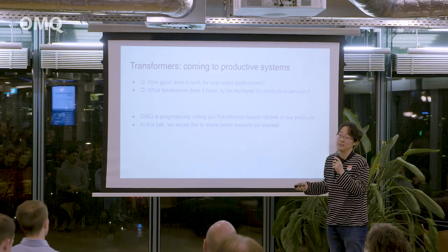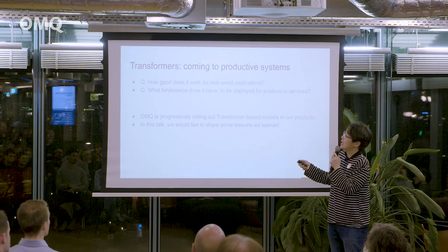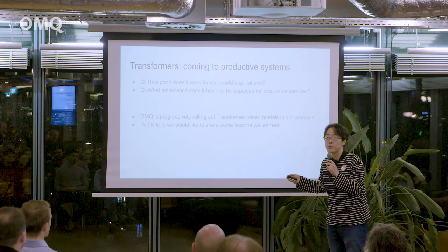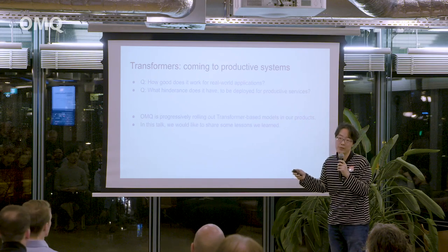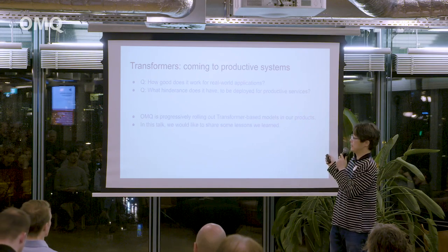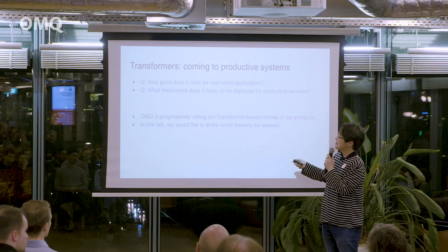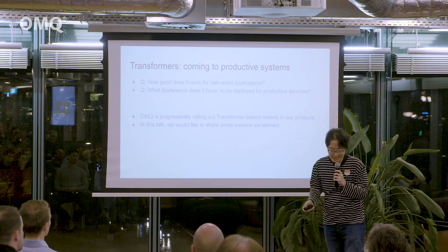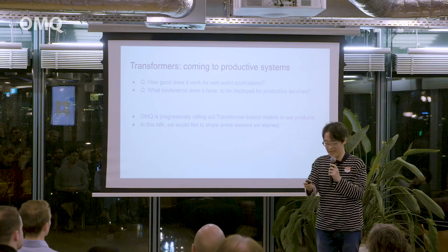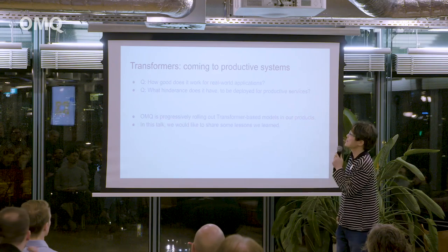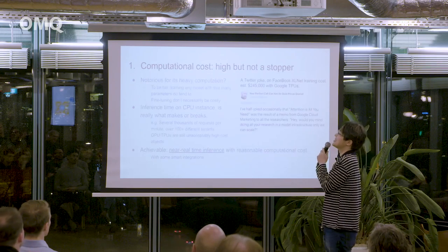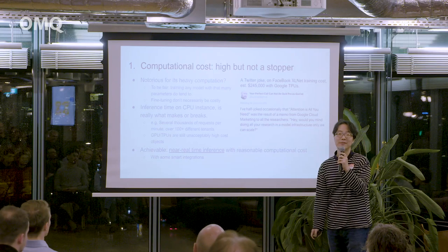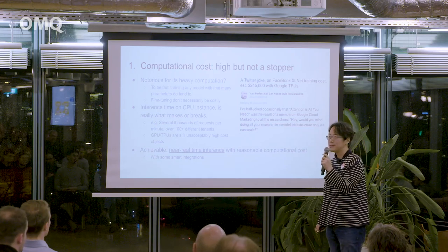Transformers are now coming to production systems like ours, and the question I was asking six months or a year ago was: how well does it work for real-world applications? What pitfalls do you face when bringing it into a production system? We are now rolling out some models in some products. In this talk I'd like to share five lessons we learned in the process. Lesson one: the first question you get when you say you're rolling out transformer models is 'that's very slow, isn't it?'